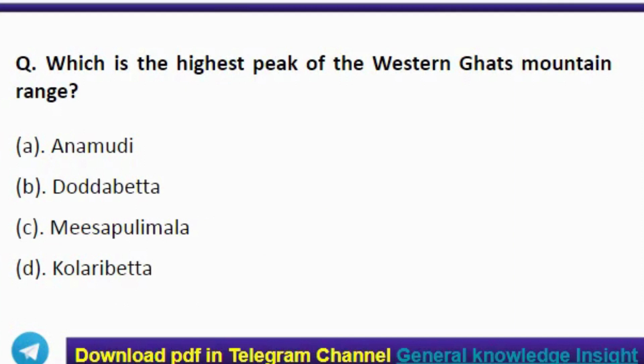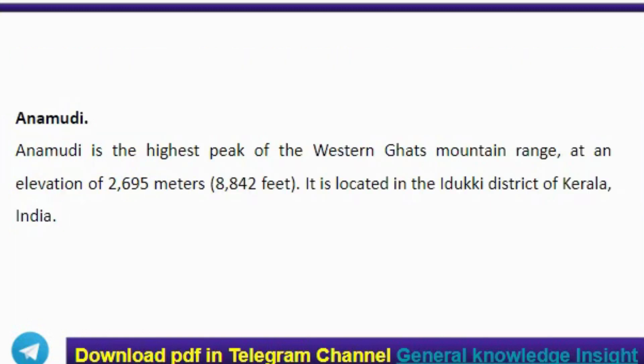First question: which is the highest peak of the Western Ghats mountain range? The correct answer is option A, Anamudhi. Anamudhi is the highest peak of the Western Ghats mountain range at an elevation of 2,695 meters.